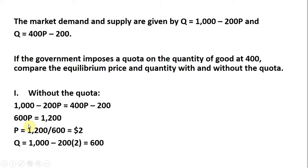Doing the simplification here, we see that the equilibrium price is $2 and the equilibrium quantity is 600 — that's 1,000 minus 400.